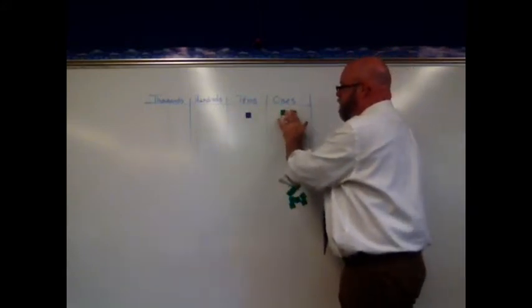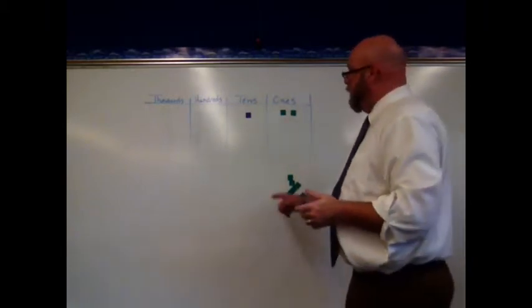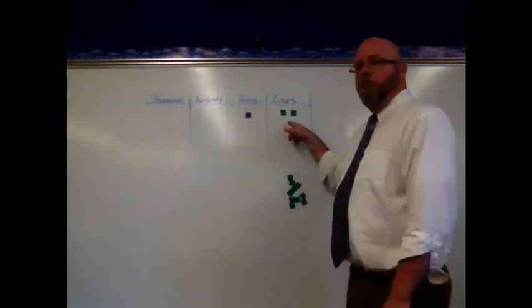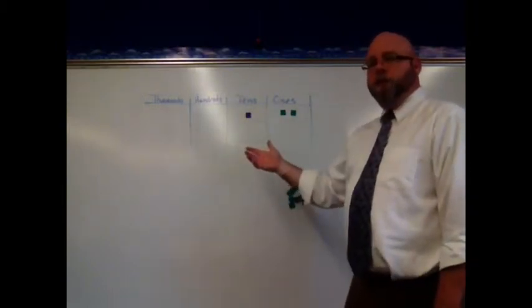And so what I see then is three times four is, or four times three is twelve. One ten and two ones. That's how we regroup when we multiply.